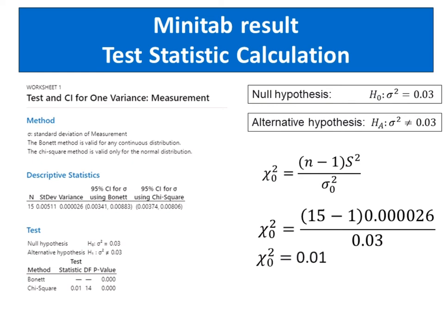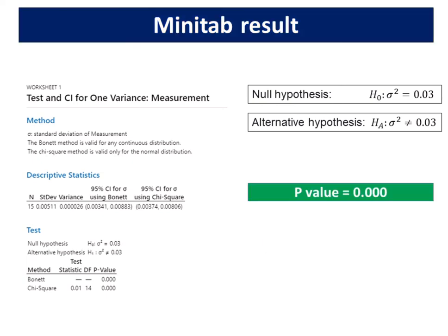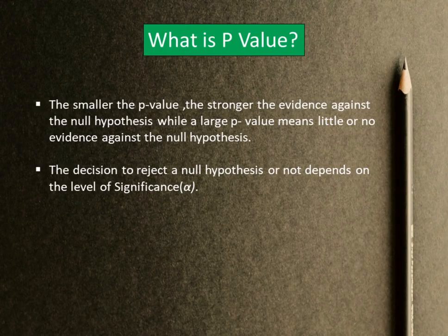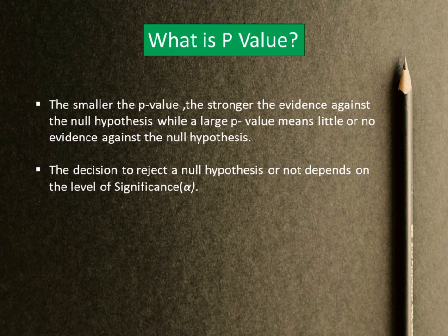To determine whether the difference between the population variance or the population standard deviation and the hypothesized value is statistically significant, compare the p-value to the significance level. In this case, the p-value is 0.000. The p-value is a probability that measures the evidence against the null hypothesis. The smaller the p-value, the stronger the evidence against the null hypothesis while a large p-value means little or no evidence against the null hypothesis.